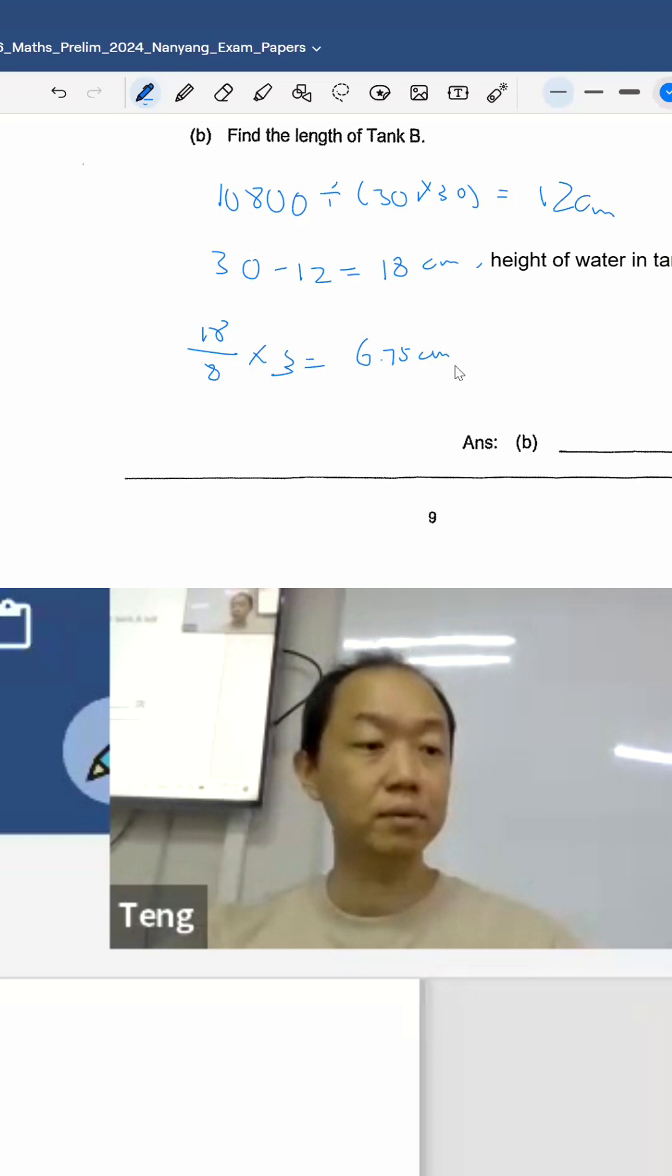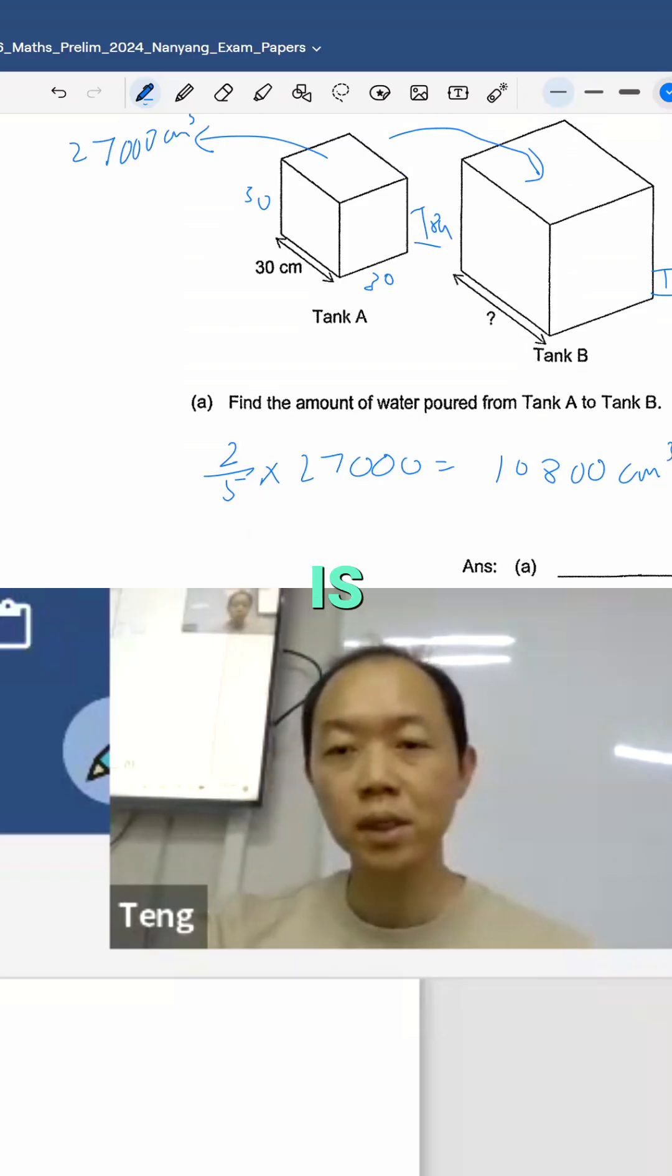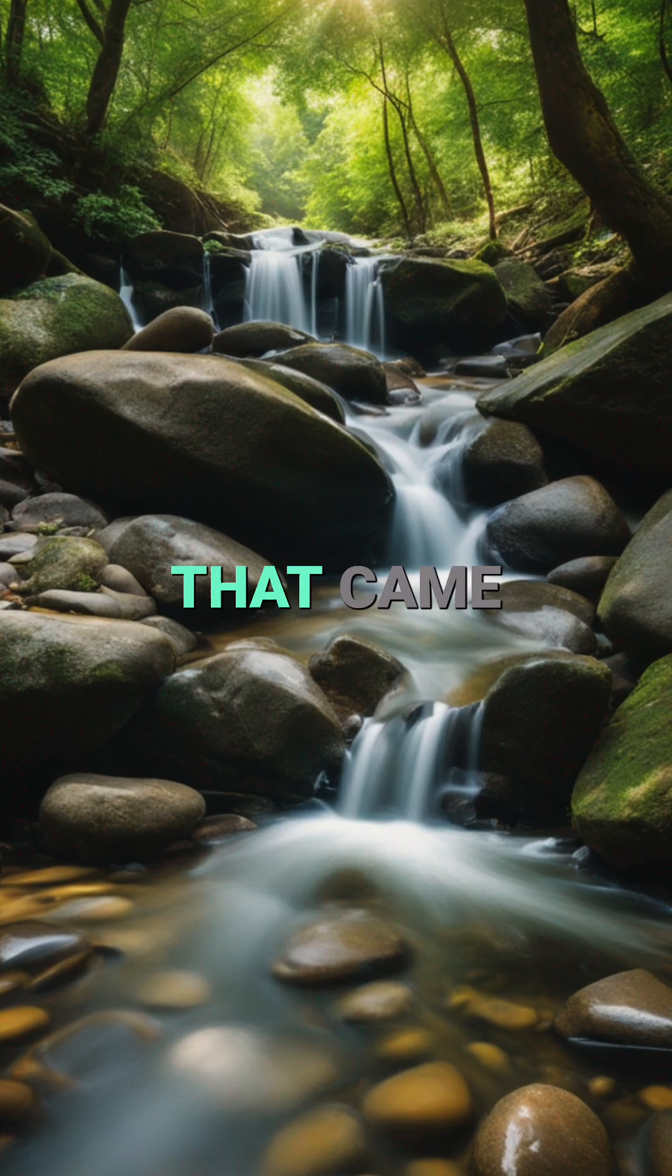So find the length. Because we know the height is 6.75 cm, here is 6.75 cm, and we know this is the amount of water that came here.